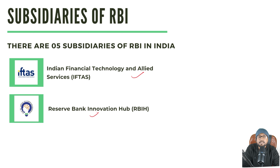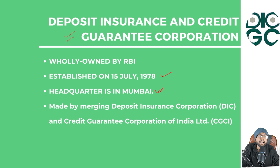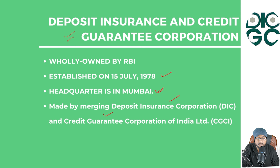We will now discuss the subsidiaries one by one in detail. The first subsidiary is Deposit Insurance and Credit Guarantee Corporation, or DICGC. This subsidiary was established on 15 July 1978 with its headquarter in Mumbai, formed by merging the Deposit Insurance Corporation and Credit Guarantee Corporation of India.